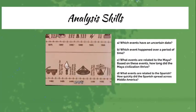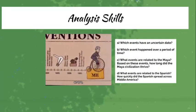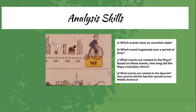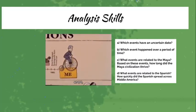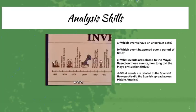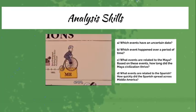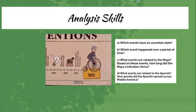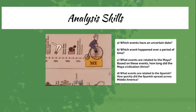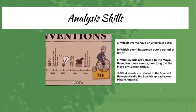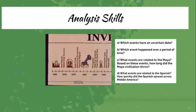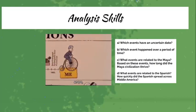When we focus on our Analysis Skills, we're going to be exploring timelines and looking at which events have an uncertain date. We'll focus on Mesoamerican history — which event happened over a period of time, what events are related to the Maya, how long did the Maya civilization thrive, what events are related to the Spanish, and how quickly did the Spanish spread across Middle America?